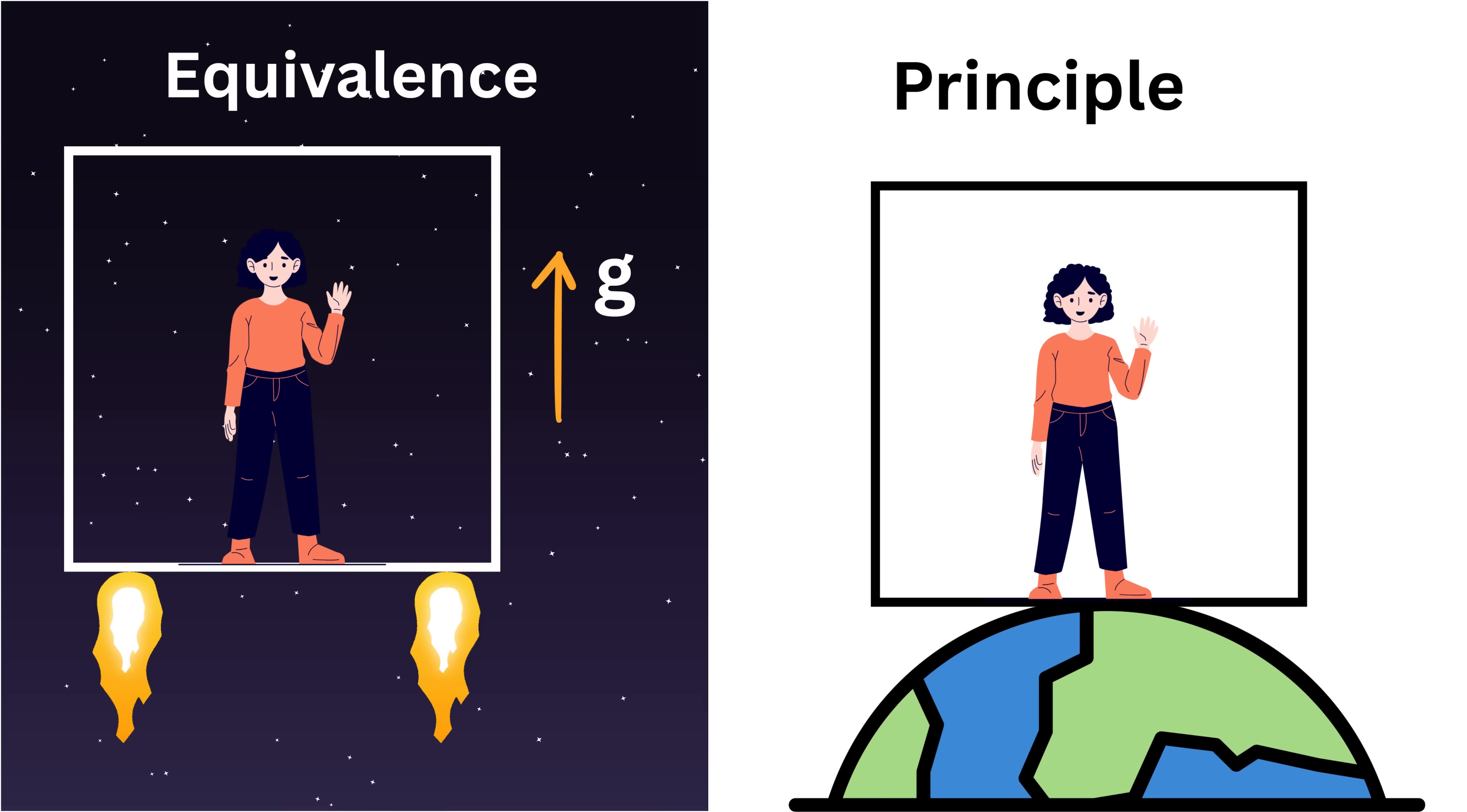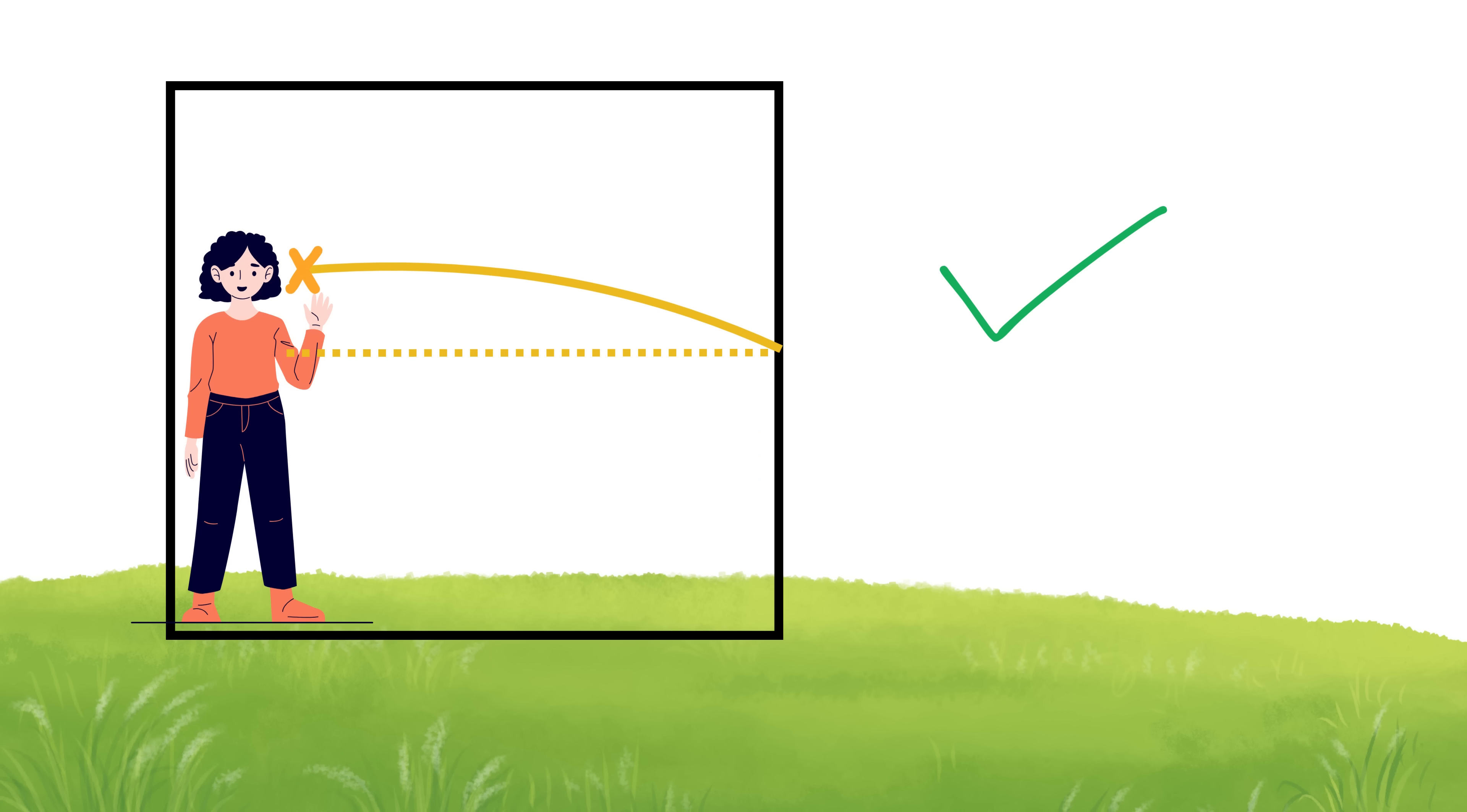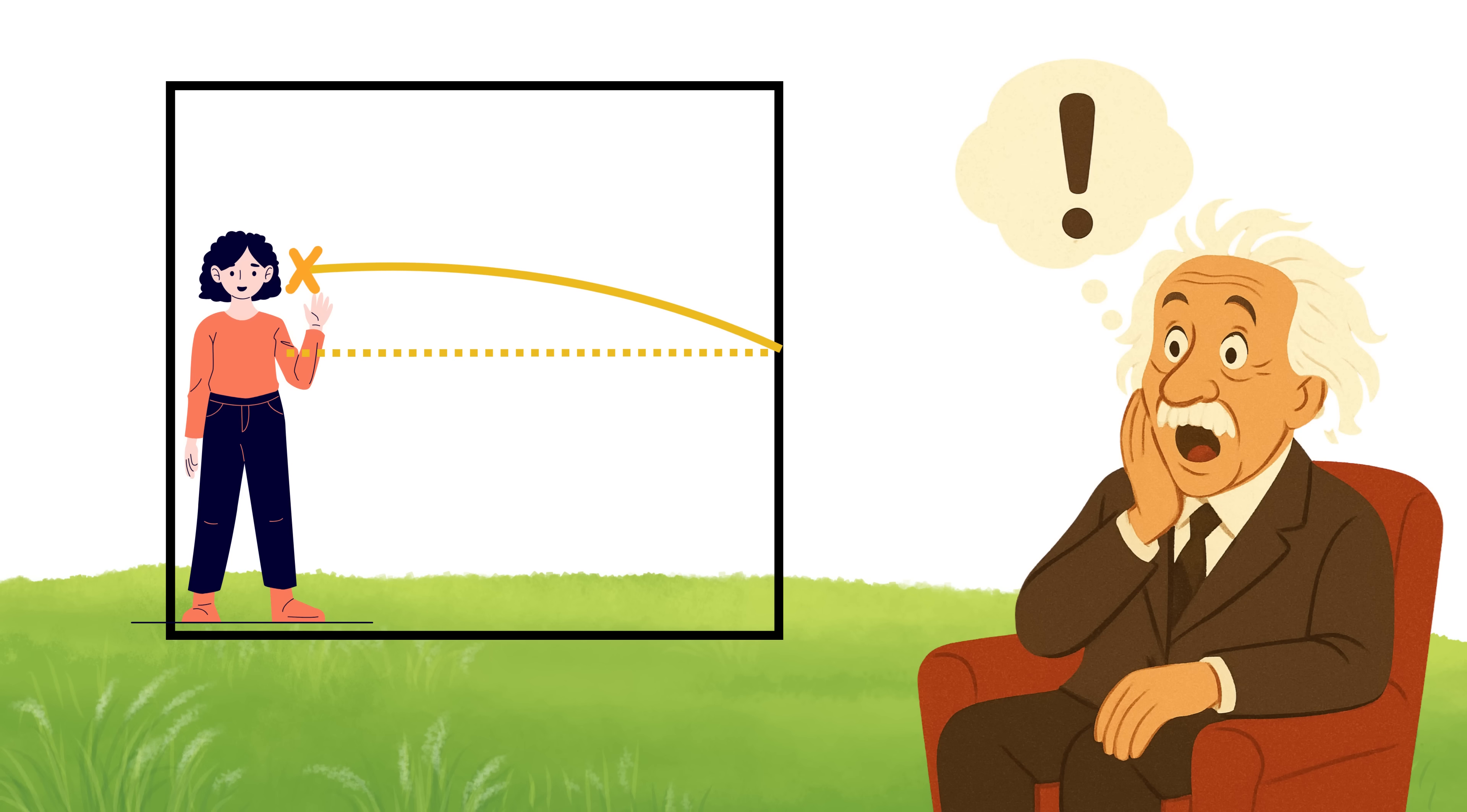Now, remember Einstein's earlier insight. If acceleration and gravity are truly the same, then this bending of light shouldn't just happen in a spaceship. It should also happen in a gravitational field. In other words, gravity should be able to bend the light. This was a revolutionary idea.